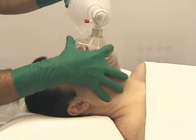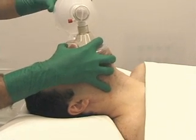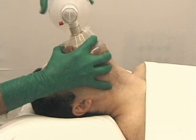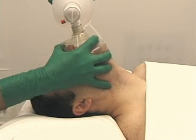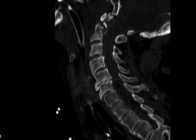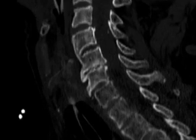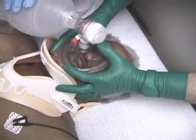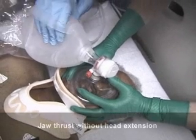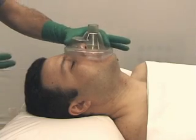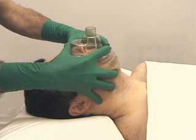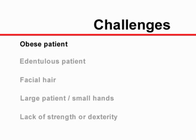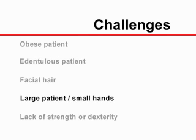Maintaining an adequate seal while extending the head, thrusting the jaw forward, and squeezing the bag with the other hand may require considerable manual strength and coordination. Extreme caution is advised in patients with cervical spine injuries in which flexion or extension of the neck is contraindicated. In this situation, the jaw thrust maneuver alone without head extension is recommended. It may be difficult or impossible to maintain an adequate seal using only one hand, such as in obese or edentulous patients or those with abundant facial hair.